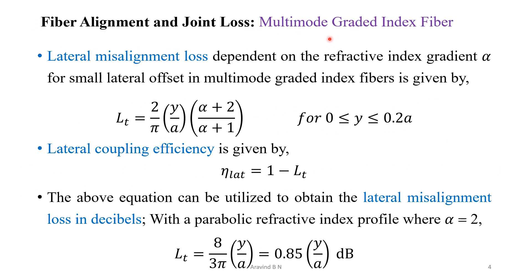Considering the multimode graded index fiber, the lateral misalignment loss dependent on the refractive index gradient alpha, for small lateral offset, is given by: lt = (2/π) × (y/a) × (α + 2)/(α + 1), for y varying from 0 to 0.2a. The lateral coupling efficiency is given by eta_lateral = 1 − lt.